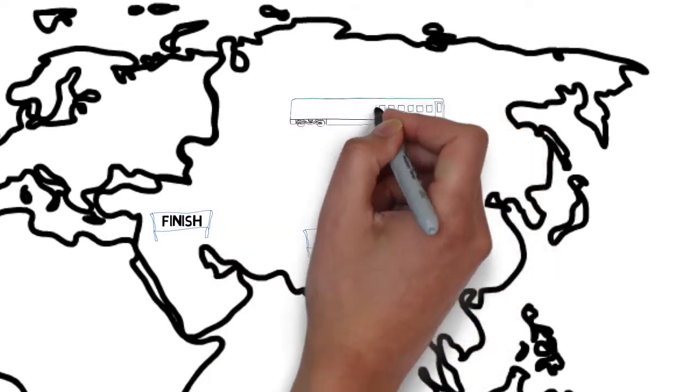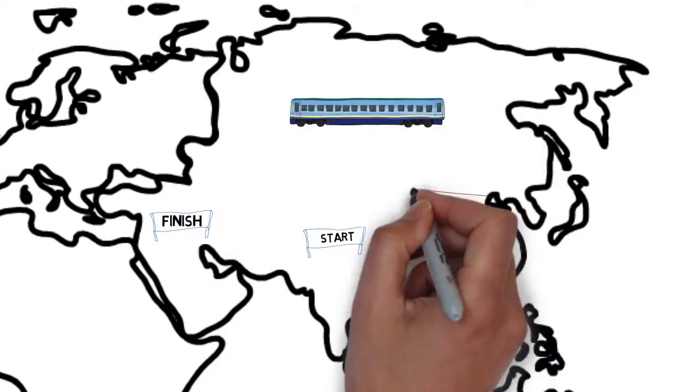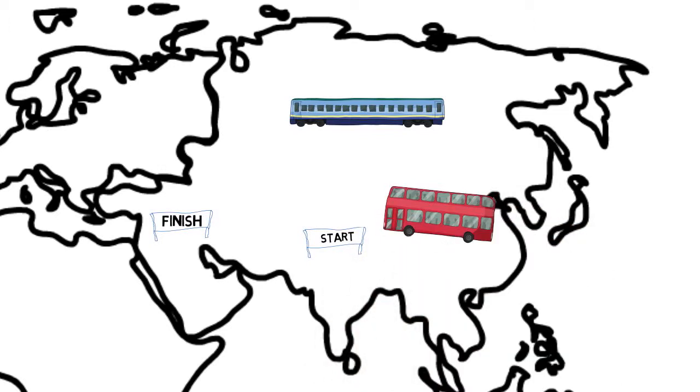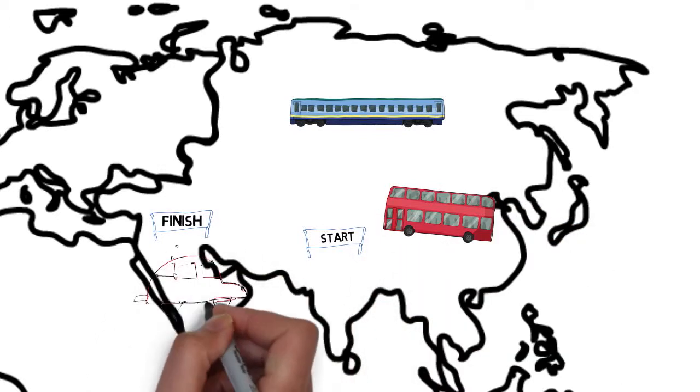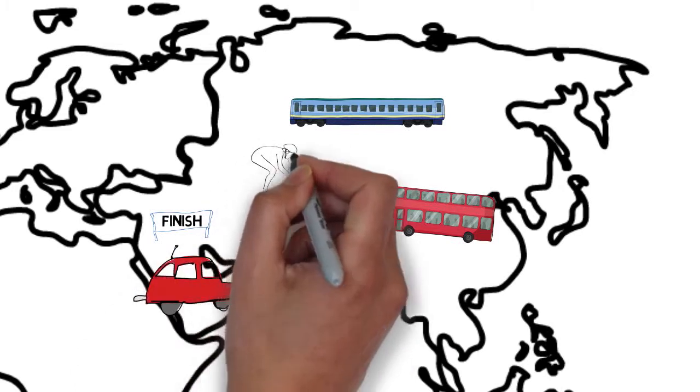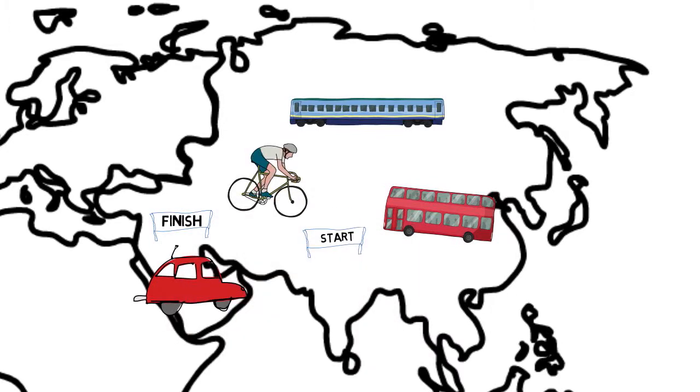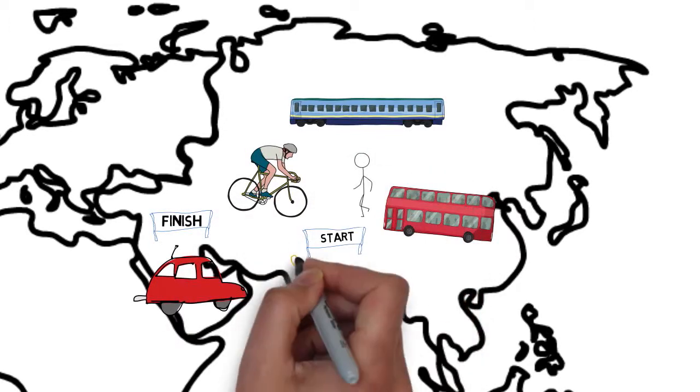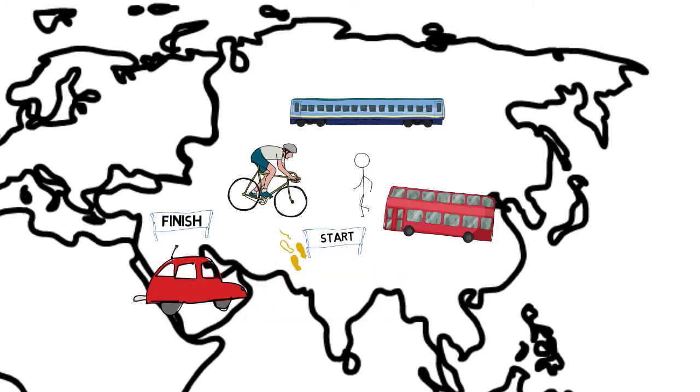In choosing the mode of getting from here to there, you would take into consideration what you have that will enable you to get there from here. Perhaps a car with fuel and, of course, you would have the ability and license to drive. If that isn't an option for you, you might choose a bus, a train, maybe even cycle or walk. You could choose the most appropriate transport for you in your circumstances.